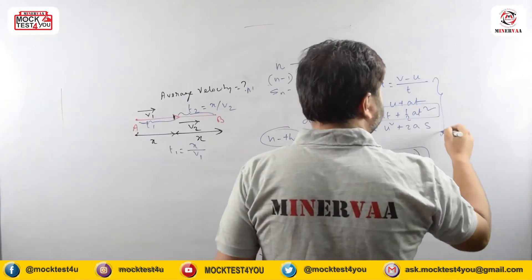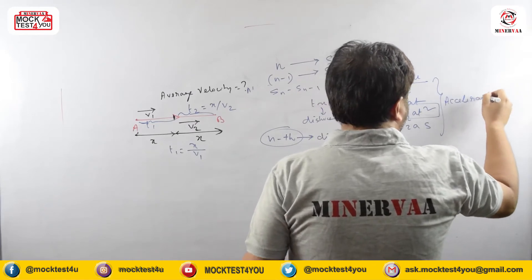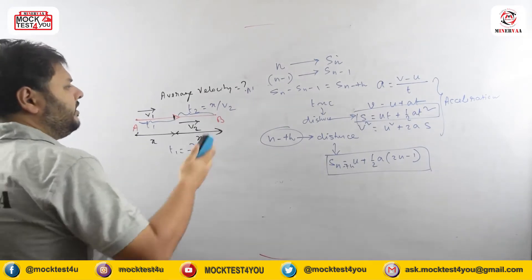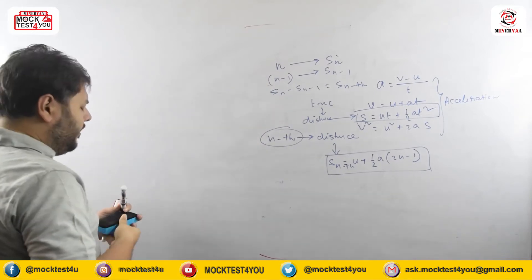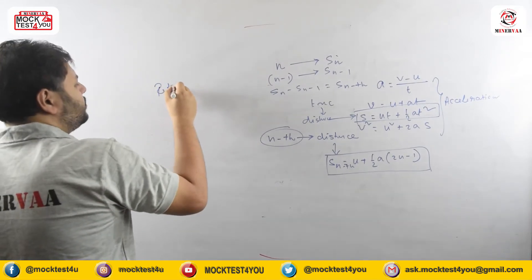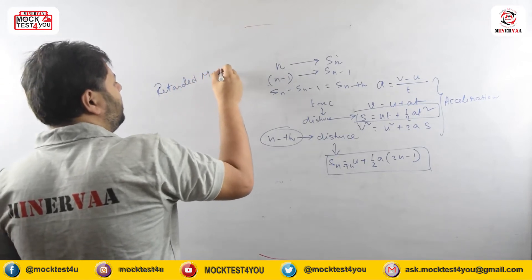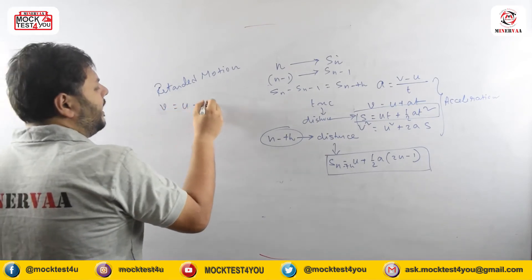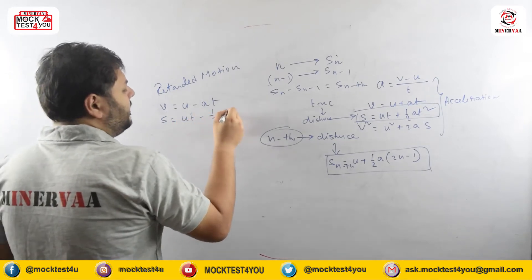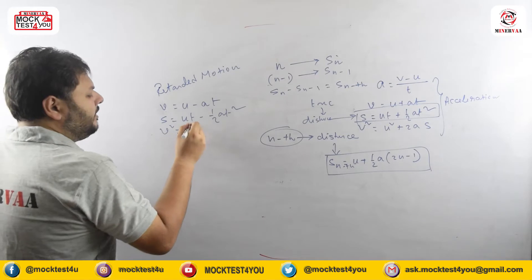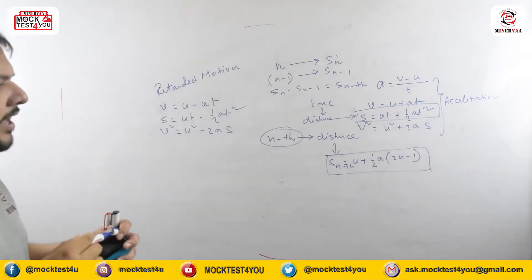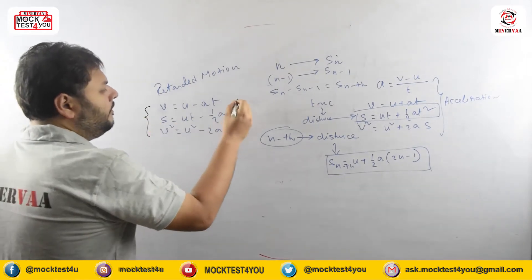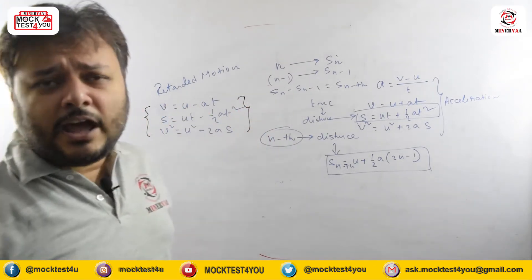For a retarding (decelerating) particle, velocity decreases with time, so the equations become: v = u − at; s = ut − ½at²; v² = u² − 2as. These are the important equations for retarded motion conditions.